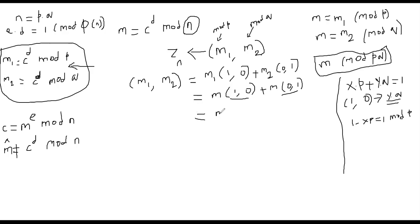So this is nothing but m times y times q. What about (0, 1)? Of course, (0, 1) maps to x times p. You can check it for yourself. And now, let me now introduce the bug in the process.